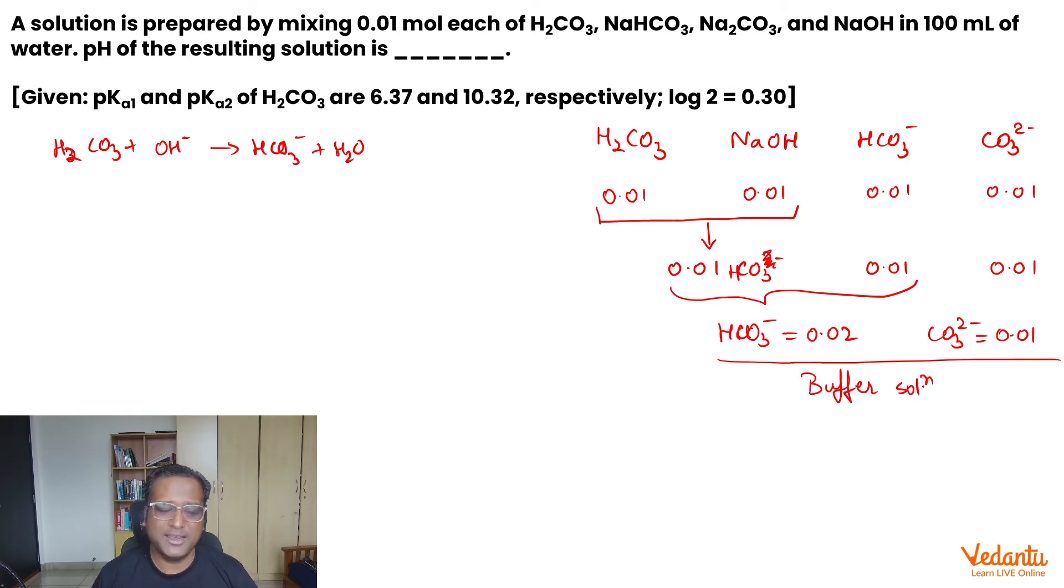Is the volume 100 ml not useful at all? No. In buffer solution formula, we know that pH can be written as pKa plus log of anion upon acid concentration. So volume gets cancelled out.